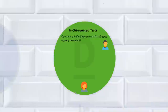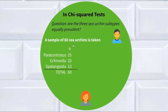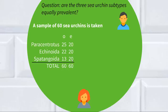Time for the final section: chi-squared tests. Are the three sea urchin subtypes equally prevalent? This is a chi-squared goodness of fit test. A sample of 60 sea urchins is taken: 25 were Paracentrotus, 22 were Echinoida, and 13 were Spatangoida — this is our observed distribution. For chi-squared tests, we need both an observed and an expected frequency distribution. If the three subtypes are equally prevalent, we'd expect 20, 20, and 20 in each category.